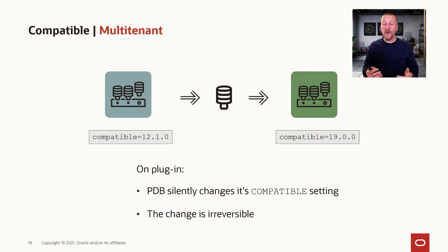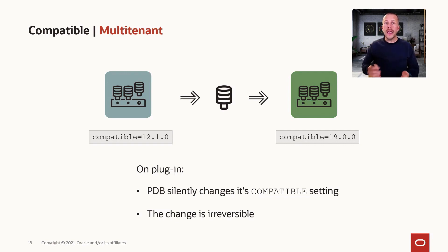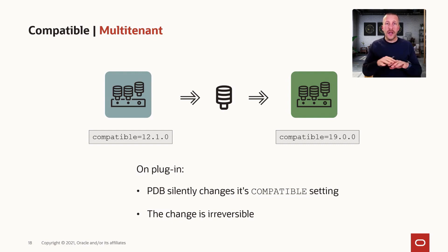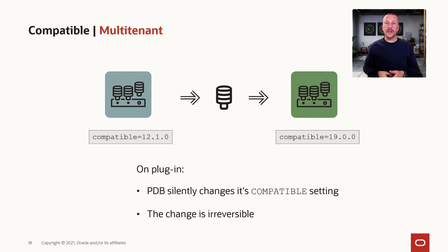Since we have already learned that the change of the compatible parameter is irreversible — it can only go up — it means that you cannot put the PDB back in the source CDB if that should be required, because it has a different compatible setting. In your container databases, have a uniform setting of the compatible parameter, so you still have the freedom to move your PDBs around as you would like.